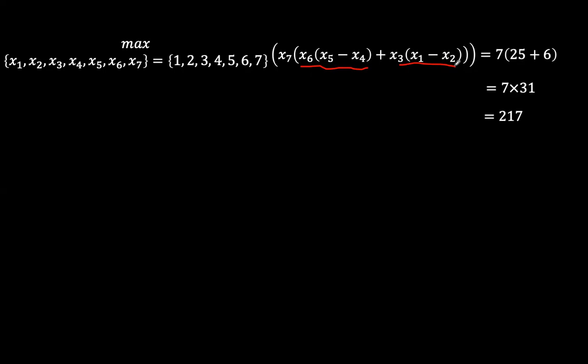If you ended up using, for example, Python to run a permutation of 1, 2, 3, 4, 5, 6, 7 that amounts to the maximum possible value of this expression, you still get 217. So this is the quickest way I would approach this problem.